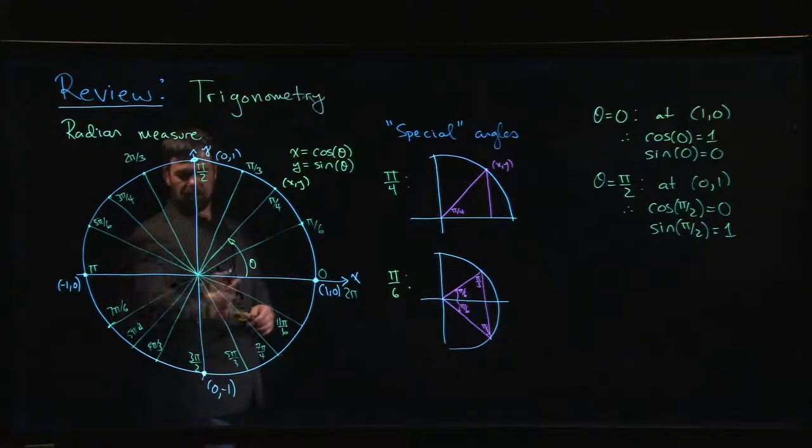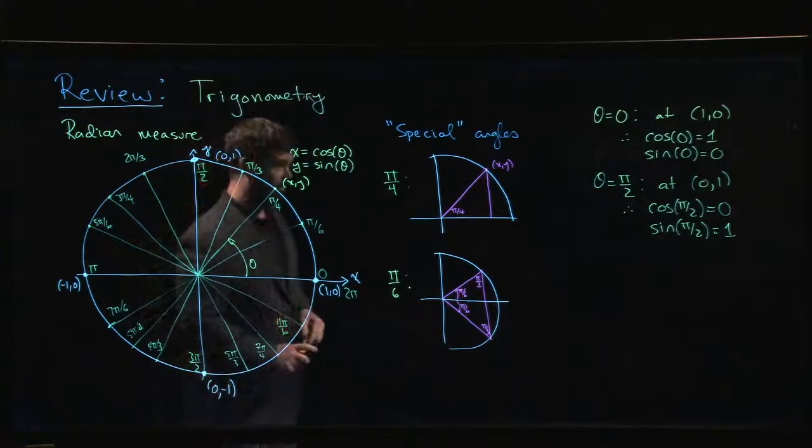And by the way, for the ones below the x-axis, a lot of people will tend to measure those going clockwise. So rather than 3 pi over 2, write it as minus pi over 2. You can do it that way as well.